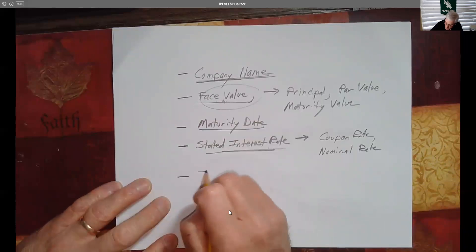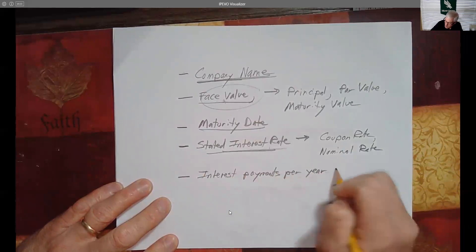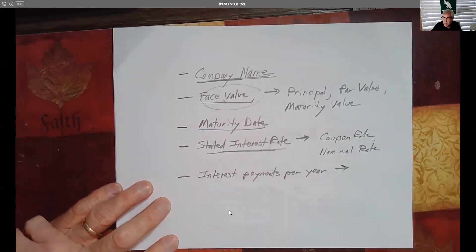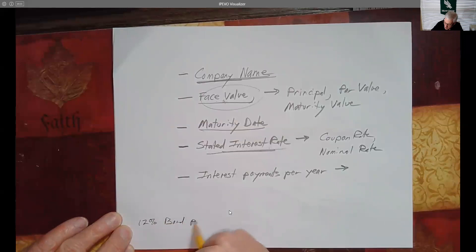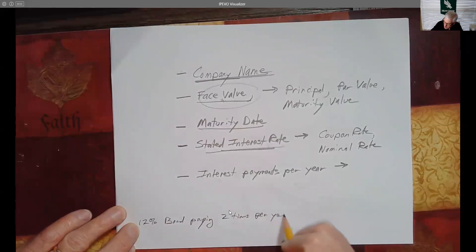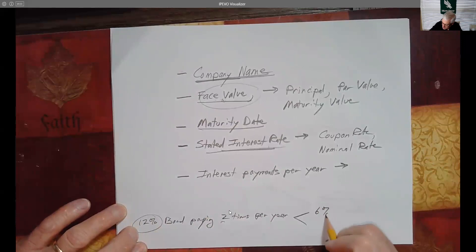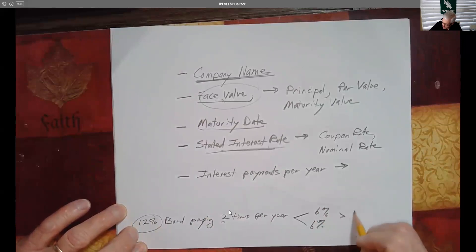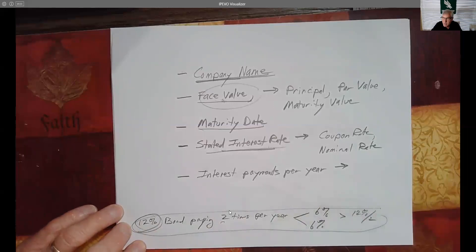Next is how many interest payments per year. Most examples will be once per year, but sometimes twice a year or monthly. For example, if you have a 12% bond paying two times a year, note that 12% is always the annual rate, so each payment would be 6% — 12 divided by 2. Keep that in mind, it's important. Mostly we'll look at payments made just one time per year.